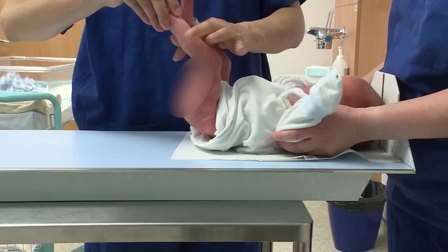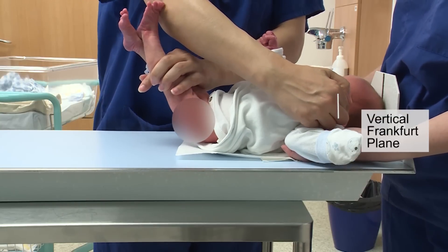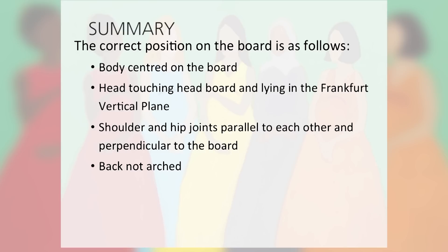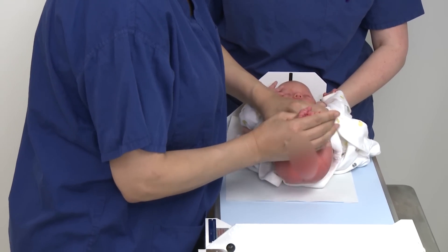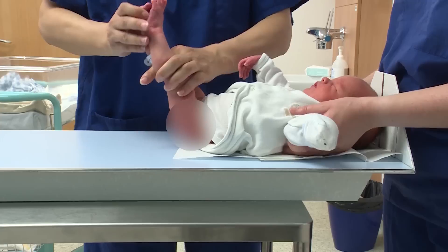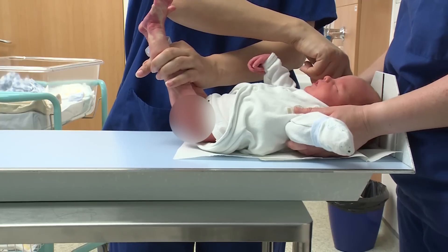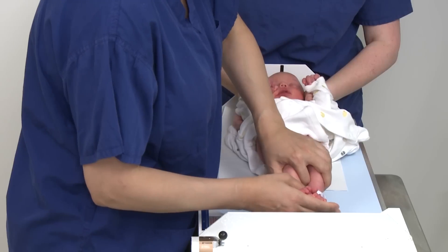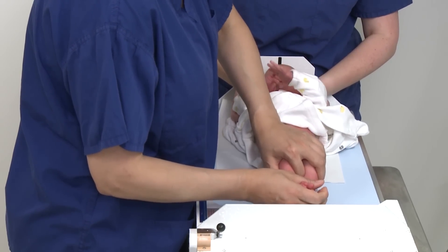The imaginary line called the vertical Frankfurt plane, that runs up from the ear canal to the corner of the eye, should be perpendicular to the board, and the back should not be arched. The measurer should stand at the counter side of the infantometer and gently hold the baby's feet with their right hand, and the knees together with their left hand, making sure that their index finger is between the knees. If you give the baby's feet a gentle squeeze, you may find that they naturally straighten their legs. If they don't, the measurer needs to apply minimal pressure, gently but firmly, to the knees to straighten the legs.